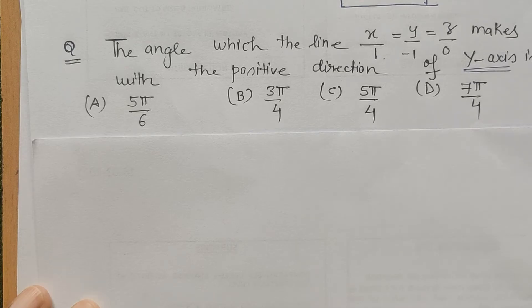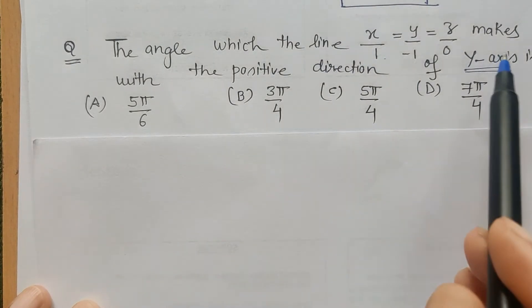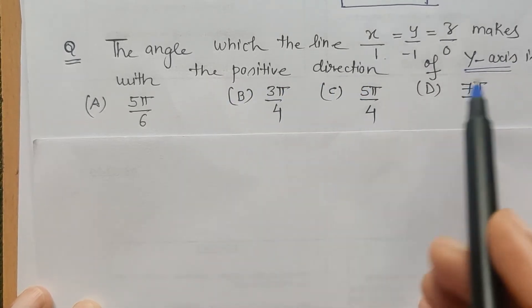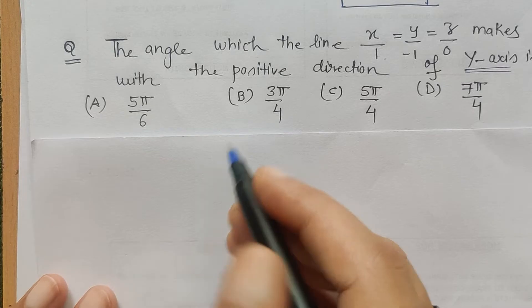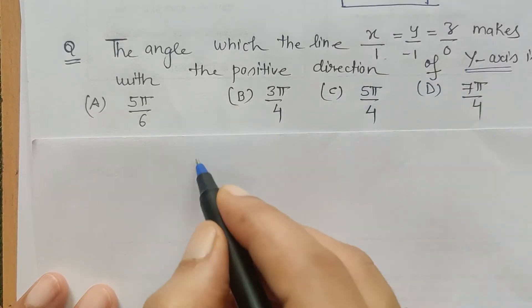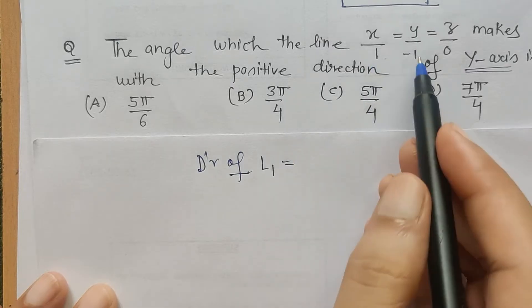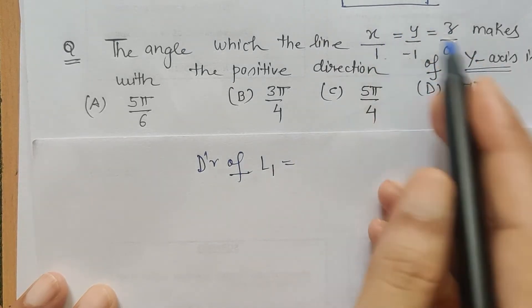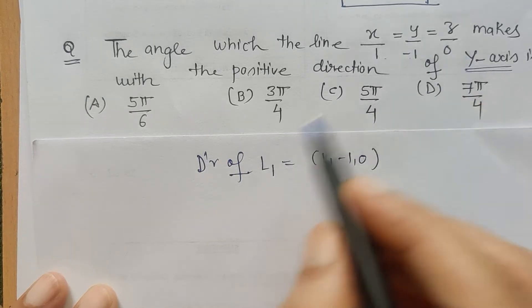To find the angle between the line that makes with the positive direction of y-axis. Here, we have to find first the directional ratio of the first line, which is the denominator 1, minus 1, 0. As it is in the standard Cartesian form, 1, minus 1, 0 is the directional ratio of the first line.